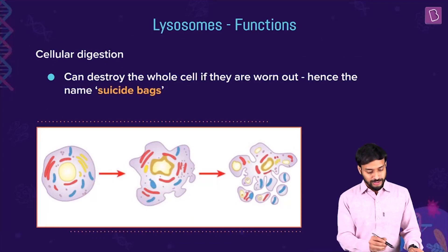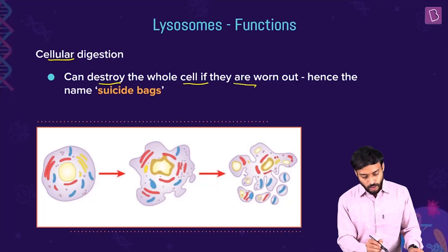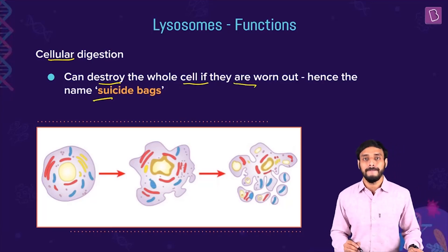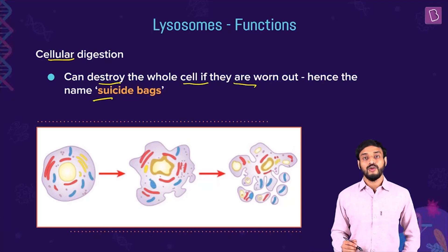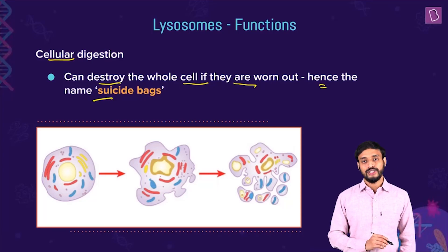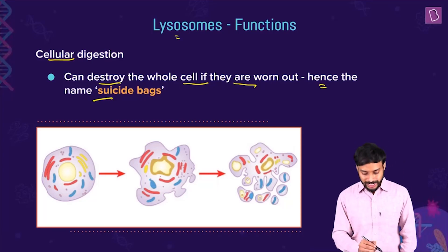Lysosomes can also destroy the whole cell when it is worn out - this is why they are named suicide bags. If cells are worn out or dead and no longer required, they are destroyed with the help of lysosomes. Hence lysosomes are known as the suicide bags of the cell.